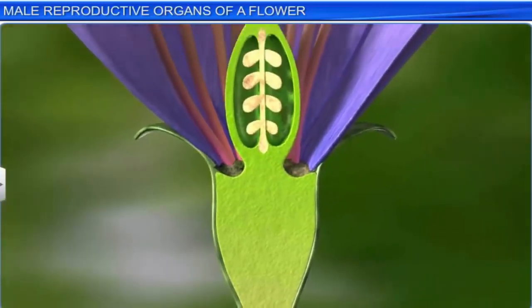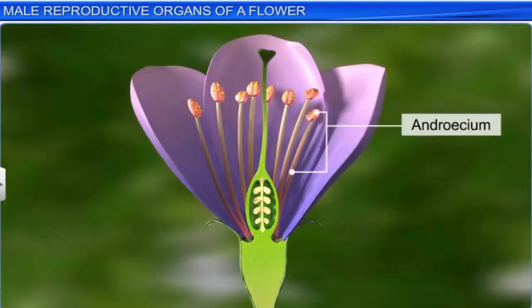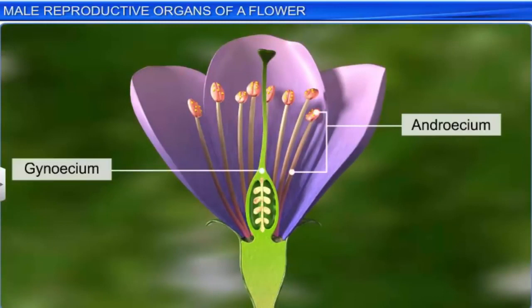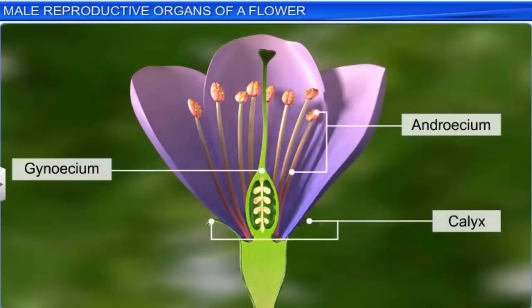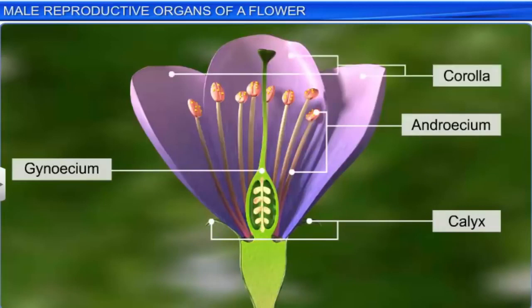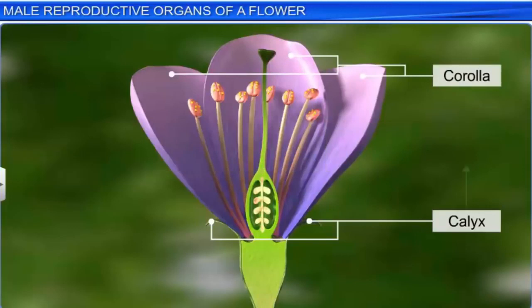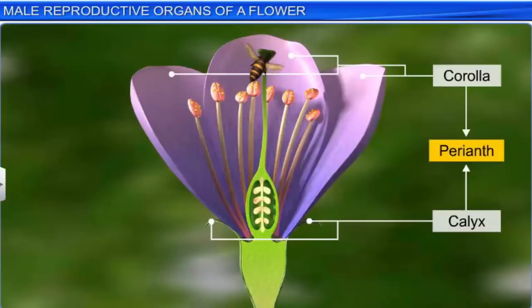The whorls include the androecium, gynoecium, calyx that consists of sepals, and lastly the corolla comprising the petals. The calyx and corolla, referred to as the perianth, are bright and colorful to attract insect pollinators.